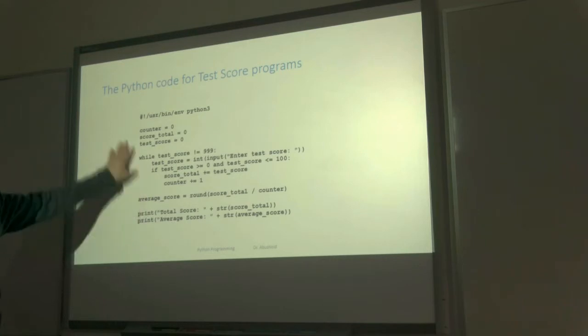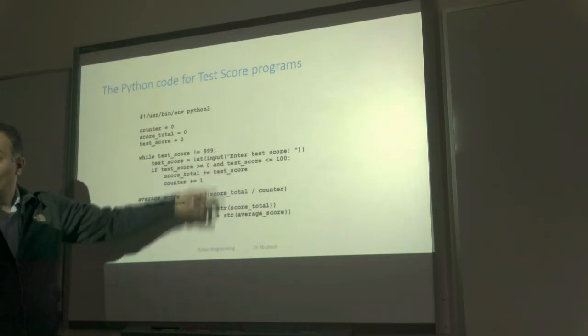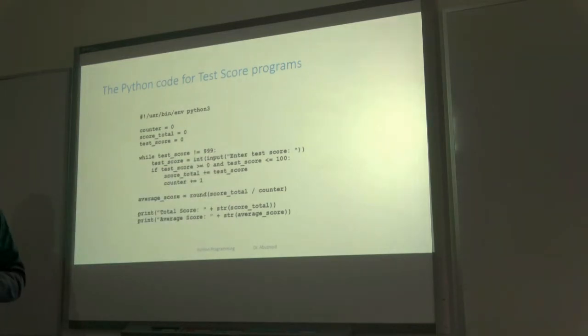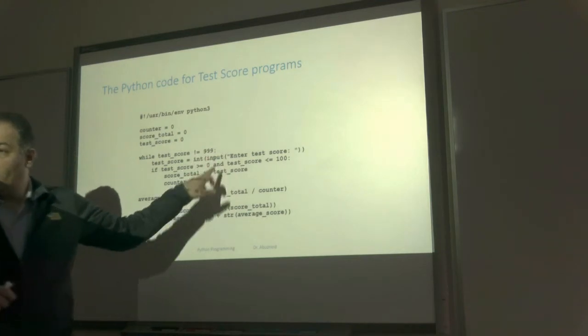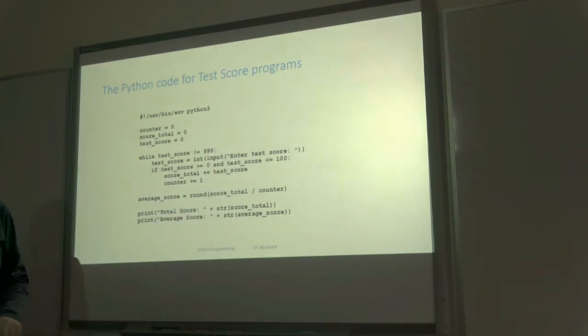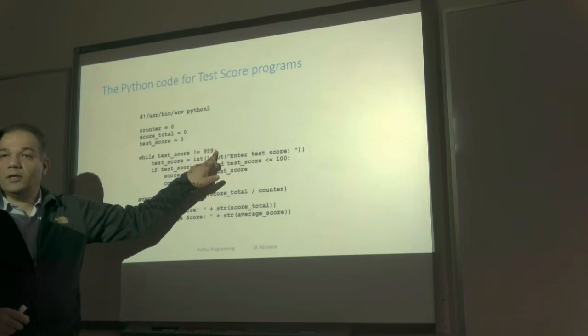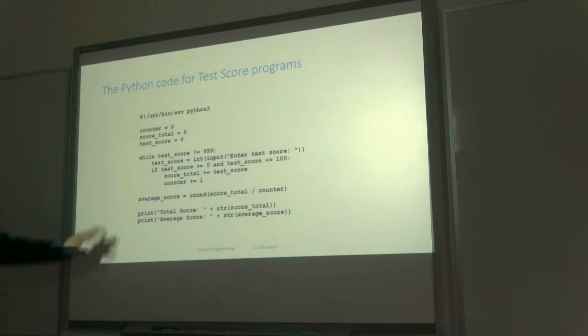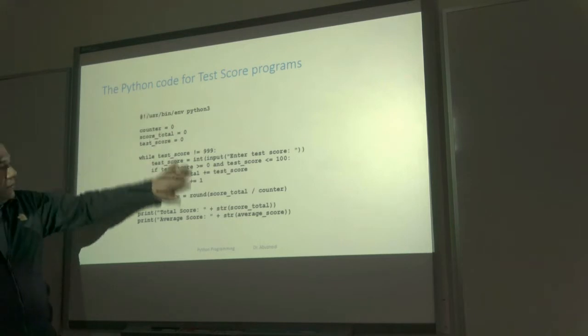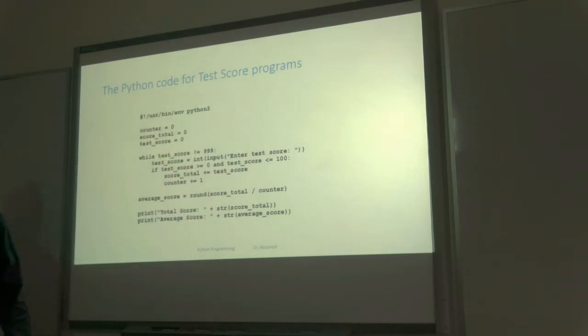We'll see later the loops. But as a simple code here, while test_score not equal to this number. The statements, the loops in Python always: the first line ends with a colon. You have to have that colon. Many of us forget the colon at the beginning. While, test, end with a colon. If, test, end with a colon. For, test, end with a colon. Then the structure. We'll talk about it in a second. This is a simple program.